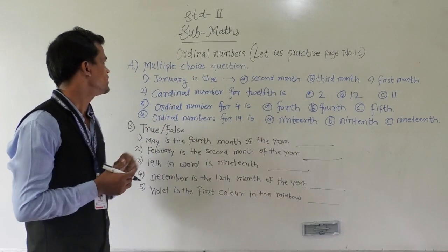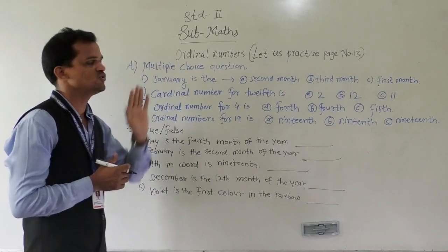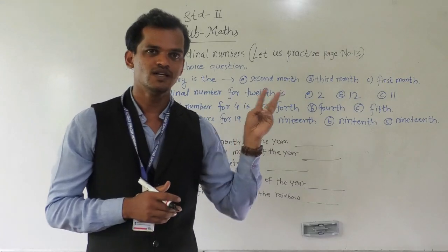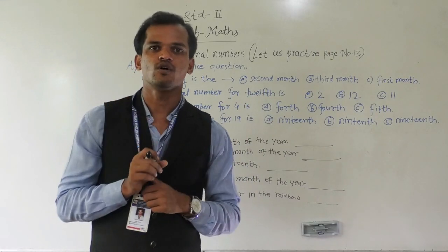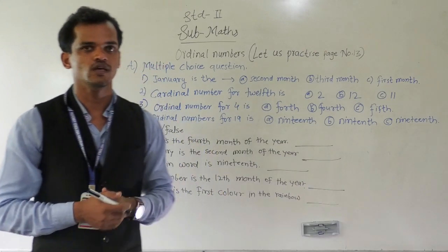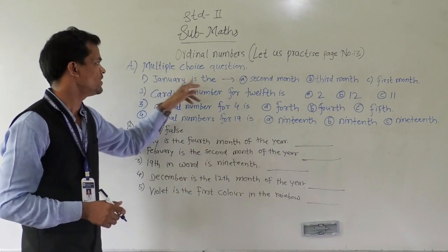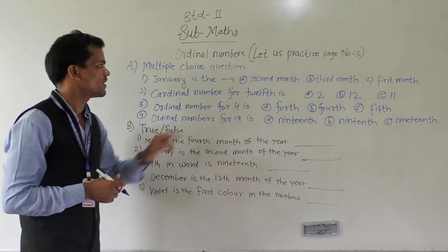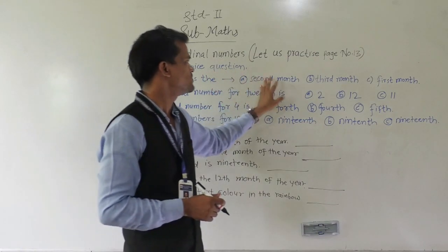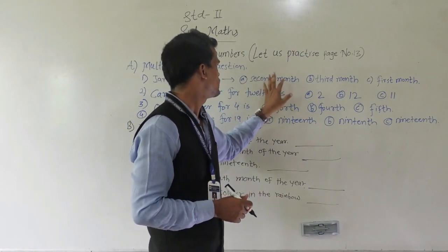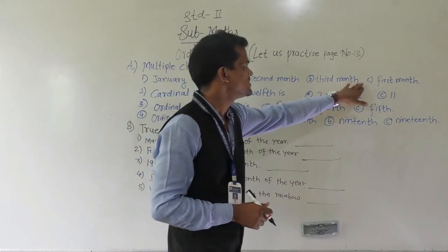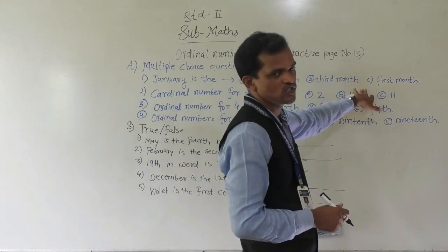See here, first question: multiple choice question. One question is given and there are multiple options. Which is the correct option, you have to tick mark on that option. So first question: January is the — this is the half sentence, and the options are A: second month, B: third month, C: first month.